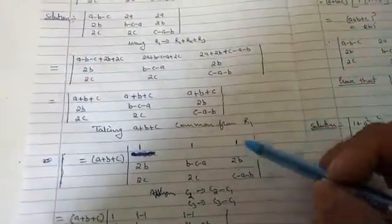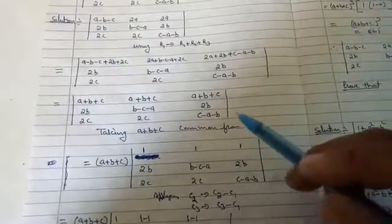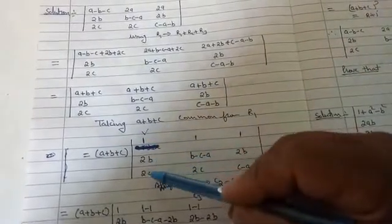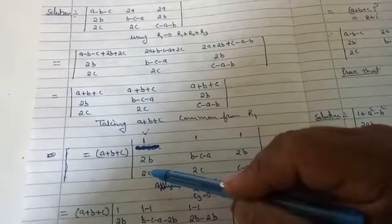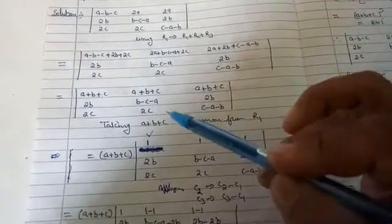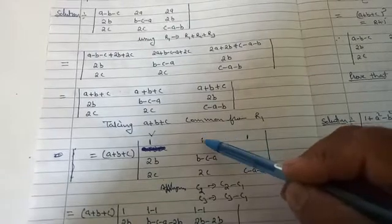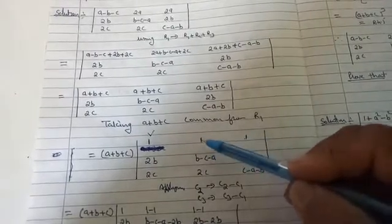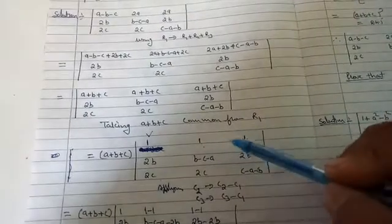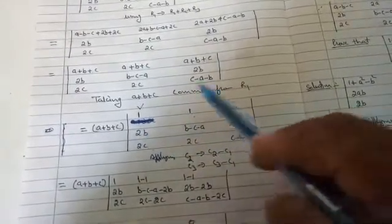I'm applying operations on columns now. As I told you, in elementary operations you do either row operations or column operations. But in this type of question you can mix them. Here I'm keeping column 1 as it is — all elements of column 1 untouched — because this is one of the rules. If you disturb it by mistake, you will not get the answer. So I'm keeping column 1 untouched and applying properties on C2 and C3: operation C2 → C2 − C1 and C3 → C3 − C1, to make zeros.